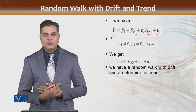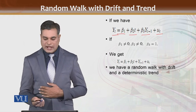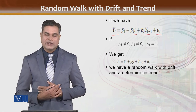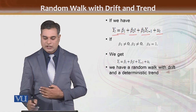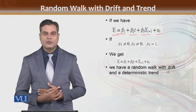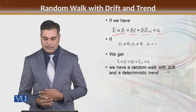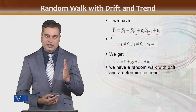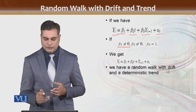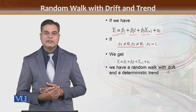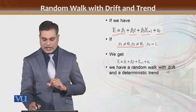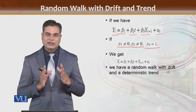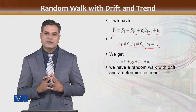Here yt is the dependent variable, beta 1 is the constant, beta 2t is the deterministic trend, and beta 3 times yt-minus-1 — if beta 3 is equal to 1, this is a pure random walk element. The error term has mean 0 and constant variance. If beta 1 is not equal to 0, there is drift in the model; if beta 2 is not equal to 0, there is a deterministic trend; and if beta 3 equals 1, there is a non-stationary series with a close association between yt and yt-minus-1.